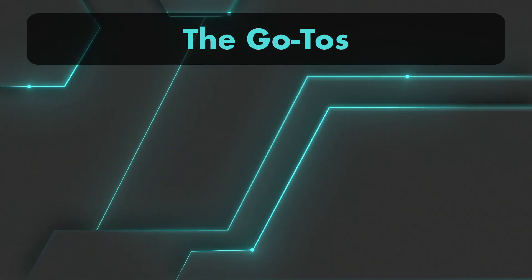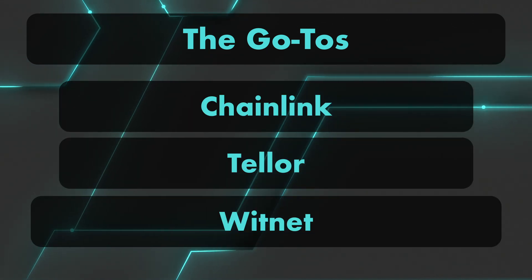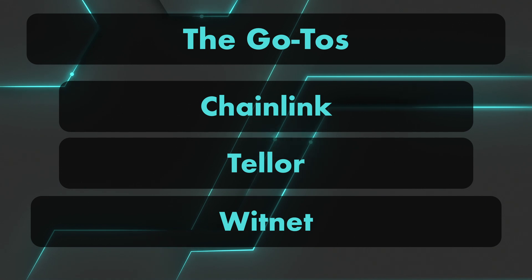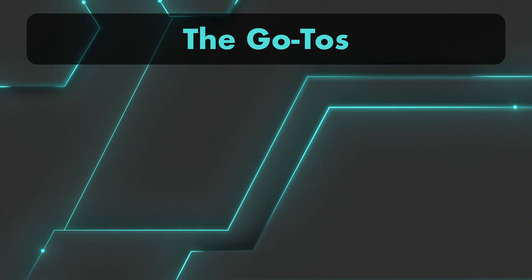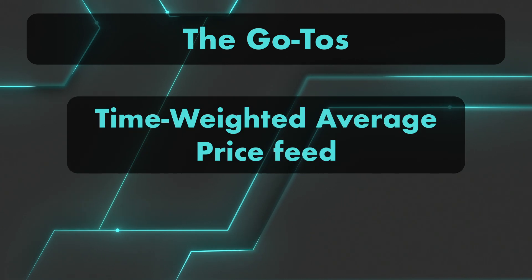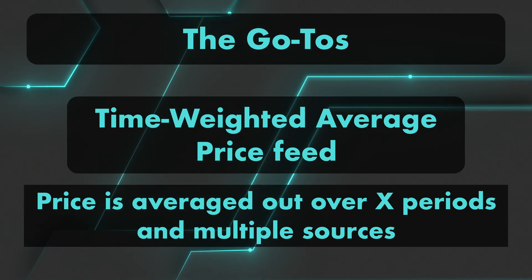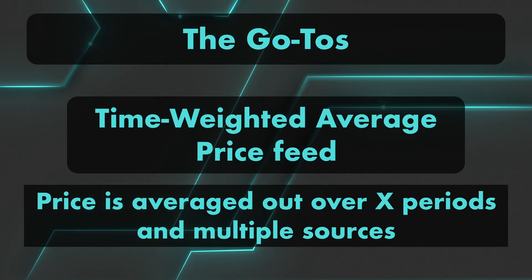Today, the go-to solution for the oracle problem is decentralized oracles such as Chainlink, Tellor, and Witnet. The best practice is to use a median of multiple oracles, which provides heightened security since it is harder and more expensive to attack various oracles simultaneously. It also ensures a smart contract gets the data it needs even if one oracle or API call fails. Another standard solution is to use a time-weighted average price feed, so that price is averaged over multiple periods and sources, preventing oracle manipulation and reducing the chance of being front-run.